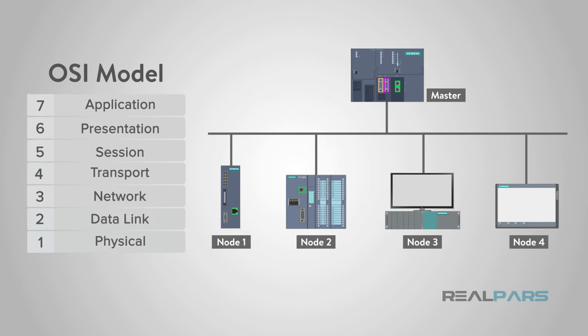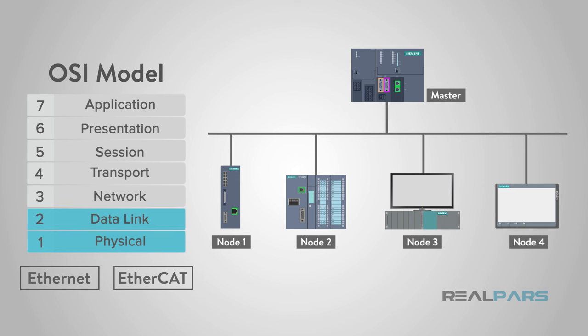EtherCAT, in contrast, uses the same physical and data link layers as Ethernet, but the protocols deviate from there. Ethernet is able to route data through many different nodes in a master-slave configuration, sending and receiving based on requests.